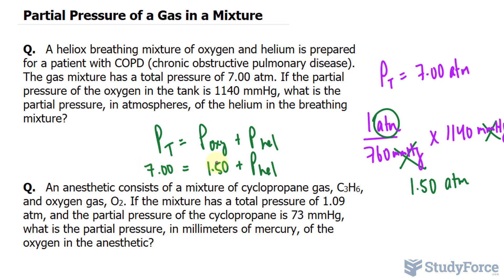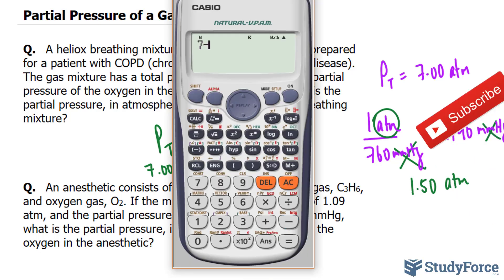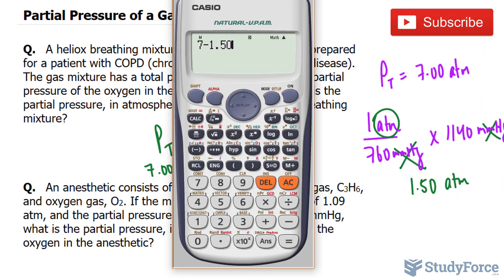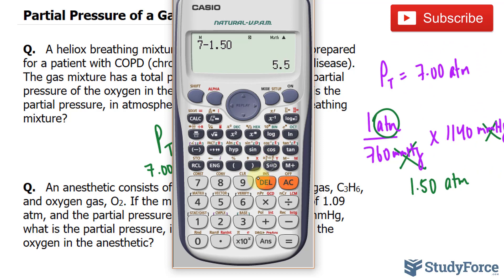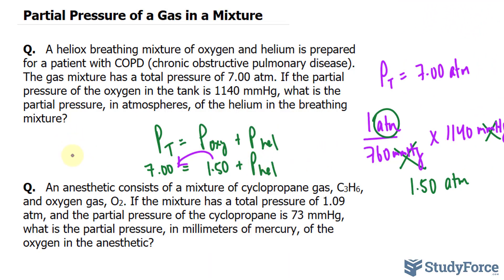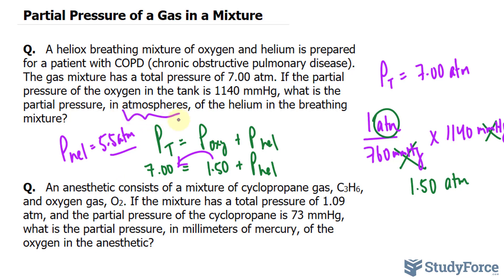If we bring 1.50 to the other side and subtract: 7 minus 1.50 — you don't even need a calculator — it's 5.5. So the partial pressure of helium is equal to 5.50 atmospheres. You can convert this to any pressure unit you like, but since they want it in atmospheres, we'll leave it that way.